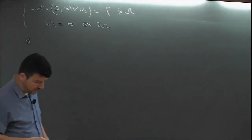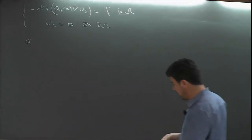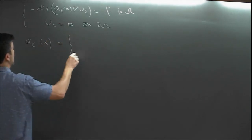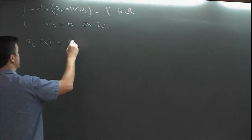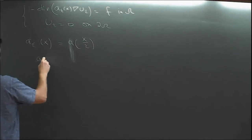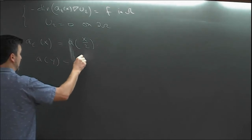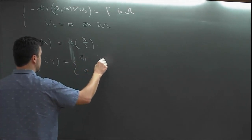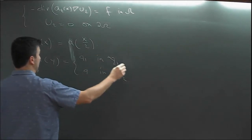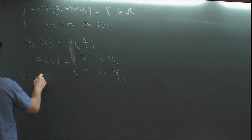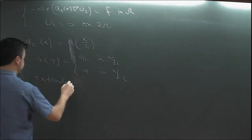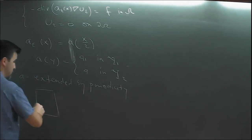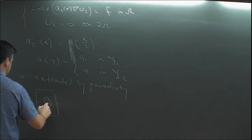We consider the toy problem of heat propagation — steady state heat through a composite isotropic material, homogeneous with different values in different materials. We focused on a coefficient of the form a(x/ε), with a being a function of y defined in the unit cell. The two constituent materials in our toy model are isotropic homogeneous materials: a₁ in material 1, a₂ in material 2. This is extended by periodicity to give the whole microstructure.